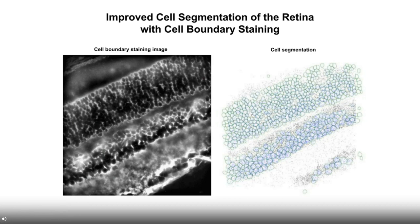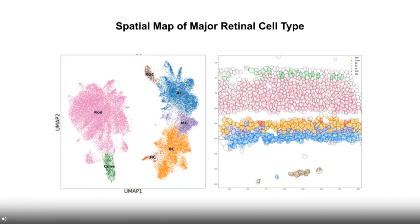Now with transcripts identified in the tissue, the next step is to assign transcripts to individual cells. To do that, we need to first segment the cells and identify the cell boundary. The white lines in the left panel are from cell boundary antibody staining. The retina tissue cells are really, really tightly packed and have irregular shapes, making it really hard to do segmentation. By testing a variety of methods, we obtained segmentation results where most cells can be successfully segmented. After segmentation, we can assign individual transcripts to each cell and obtain the expression profile for each cell, much like the cell-gene matrix from single-cell RNA-seq.